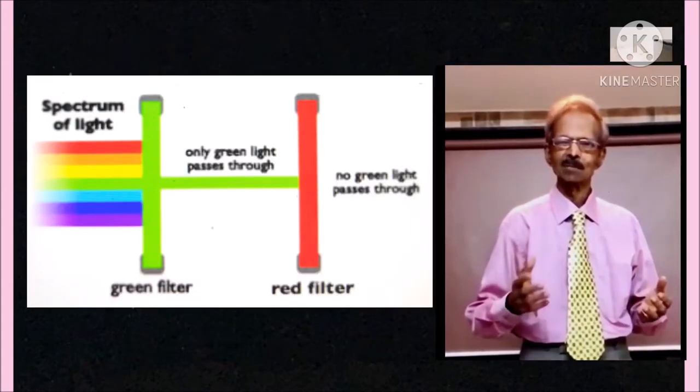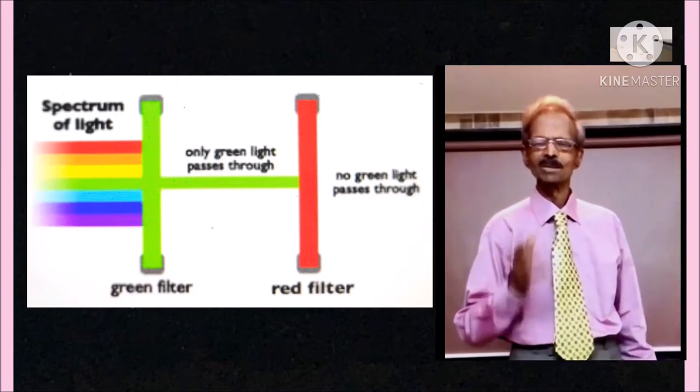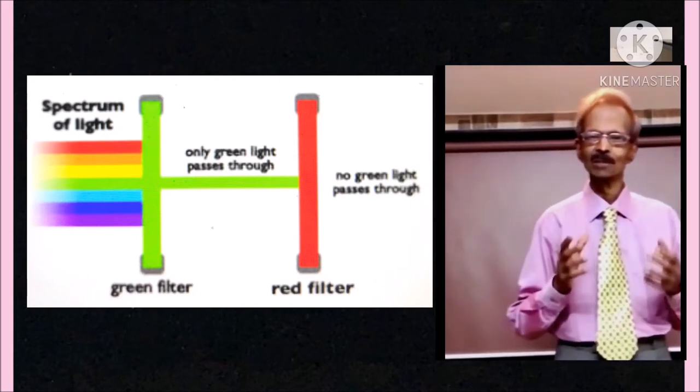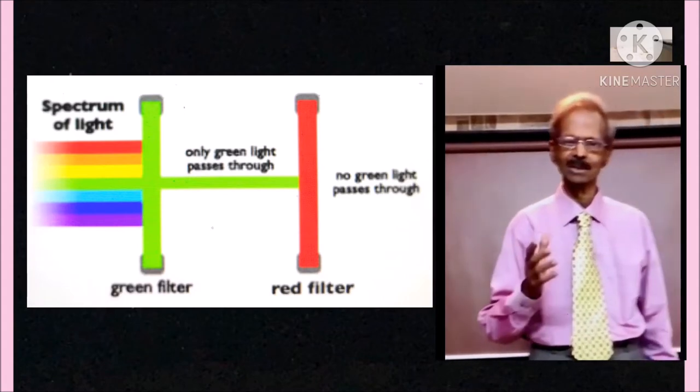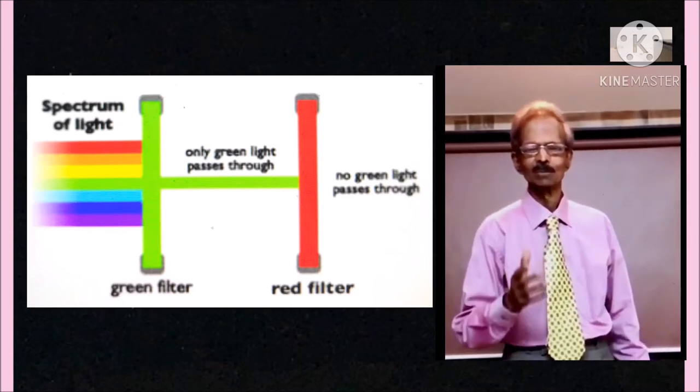When white light is passed through a green filter, green light is transmitted. When green light is passed through red filter, green light will be absorbed by red filter and light will not be transmitted.